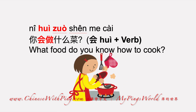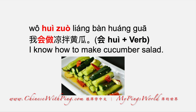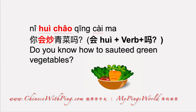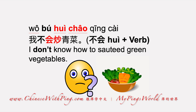Now ask the question: 你会做什么菜? — What food do you know how to cook? You add the verb 做 after 会. I know how to make cucumber salad: 我会做拌黄瓜. 你会炒青菜吗? — Do you know how to sauté green vegetables? Put 吗 at the end to make it a question. To make 会 negative, put 不 before 会: 我不会炒青菜 — I don't know how to sauté green vegetables.